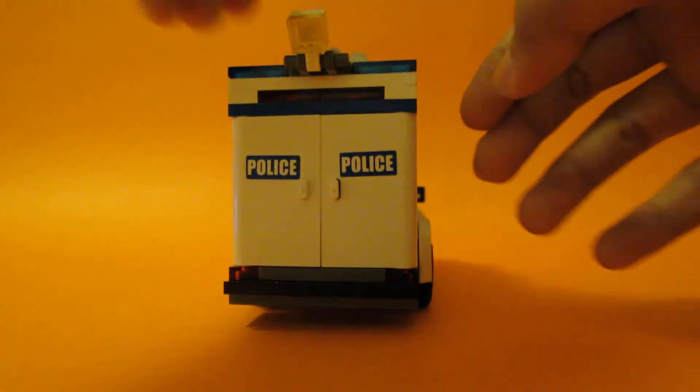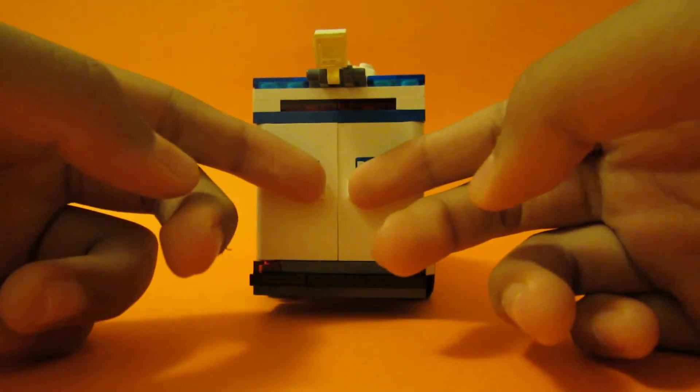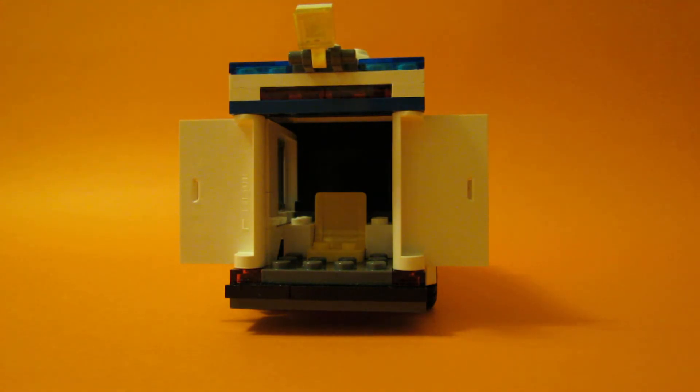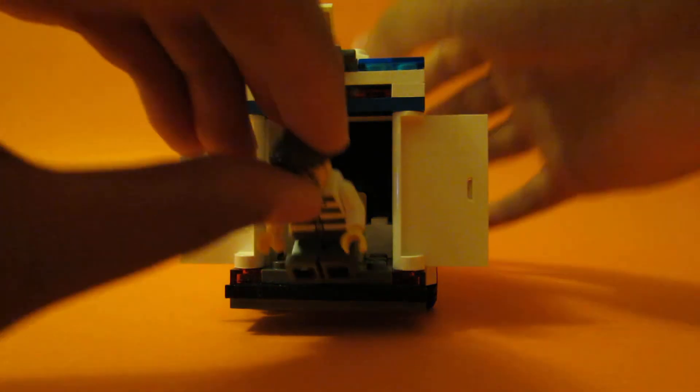Here is the back of the prisoner transport, and inside is a little portable jail cell that the robber can go in, just like this.